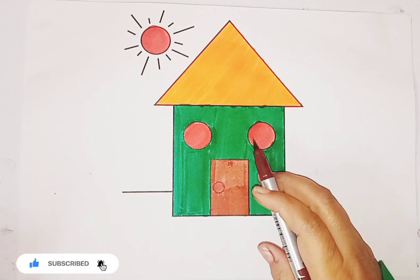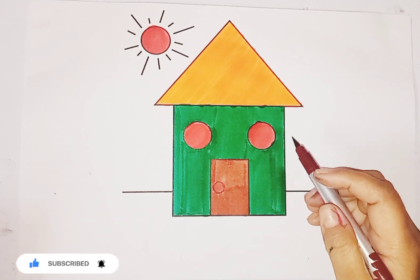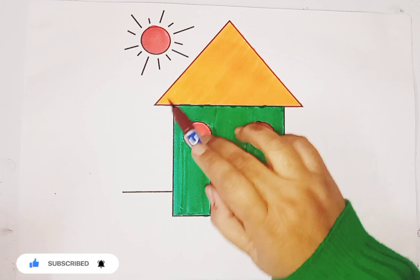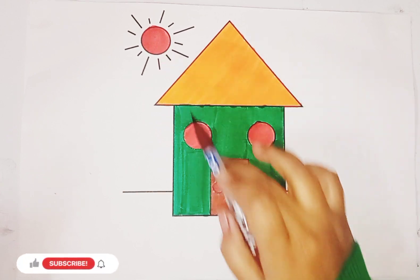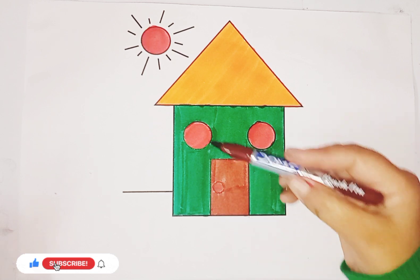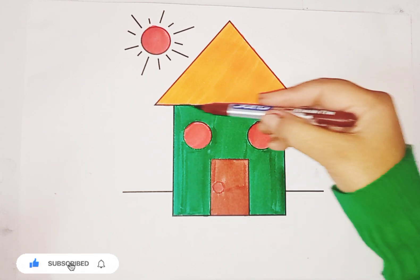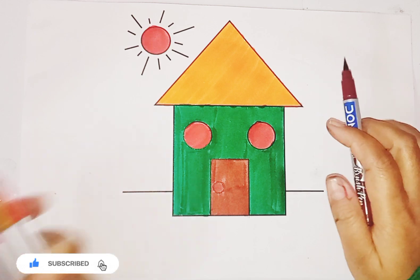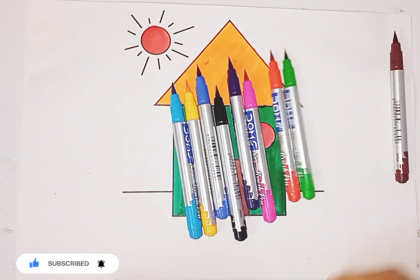So kids, our shape house is ready. Let's review. Triangle with orange color, circle with red color, rectangle with brown color, and this big square is green color. So kids, I hope you like the video.